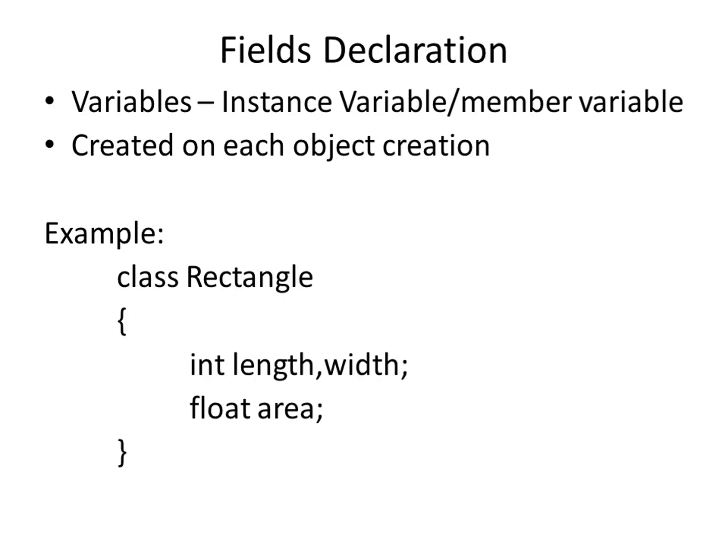How are we going to declare the fields? In Java, we call the data members as fields, and the variables are called instance variables. For example, here we are creating a class called Rectangle, which will have the variables length and width. We give the data type followed by the variable name, also called the instance variable. The variables which you declare within the class are called instance variables.